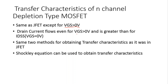In the case of the depletion type MOSFET, the drain current flows even when VGS is greater than 0 volt, and in this case the drain current is greater than IDSS.